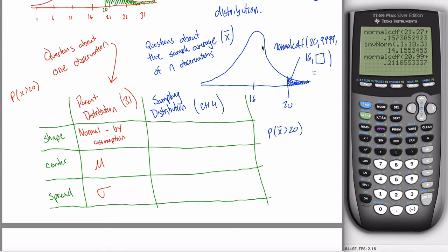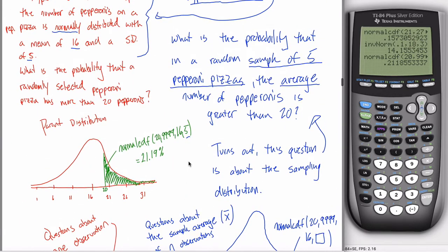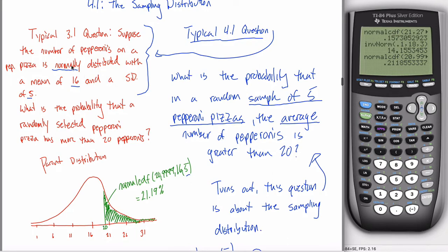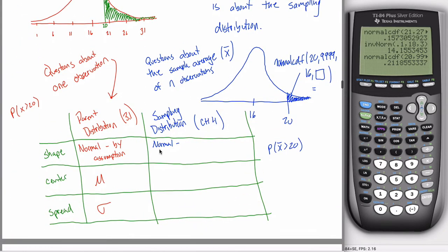You might ask about the shape. It turns out the sampling distribution is still normal, but that deserves some explanation because the problem doesn't directly tell you the sampling distribution is normal — the given information describes the parent distribution. The sampling distribution is normal when the parent distribution is normal, but we need to explain why. And what if the parent distribution is not normal — what if it's left-skewed or right-skewed? Does that mean the sampling distribution is also skewed? The answer is no. We'll talk more about shape, but first let's cover the center and spread.